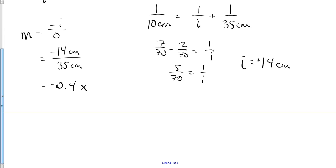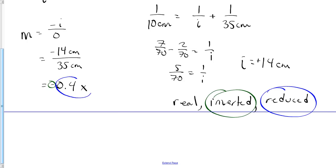Now how did we describe that image? That image was real, that image was inverted, that image was reduced. Inverted means negative sign, reduced means smaller than 1, real means positive.